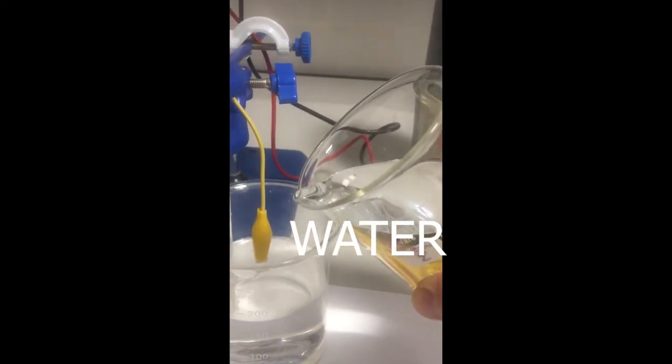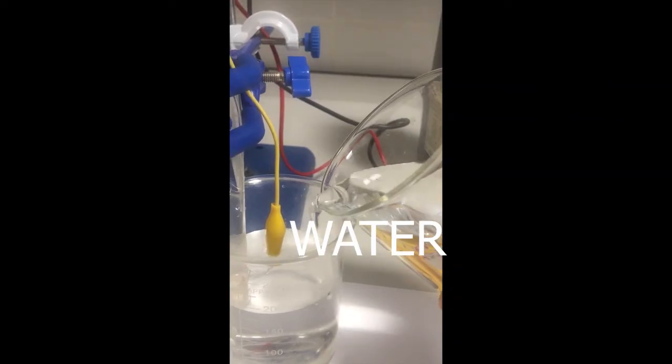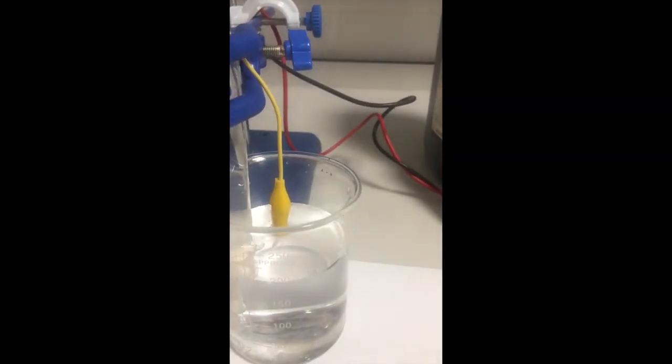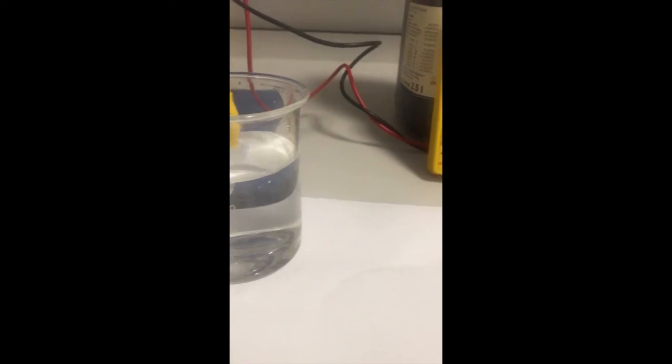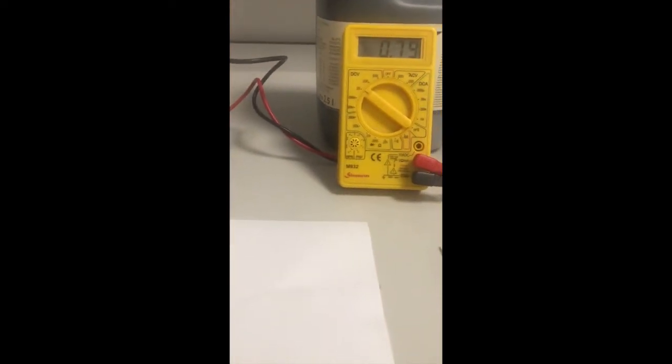When we add some water to the zinc sulfate solution, the copper dissolves more. We understand this from the potential increase at the multimeter.